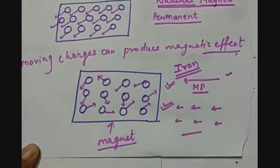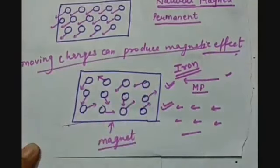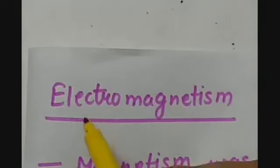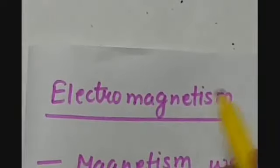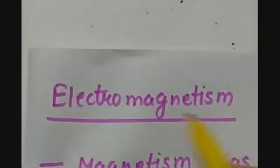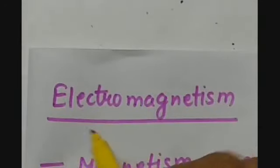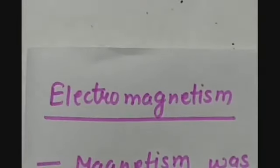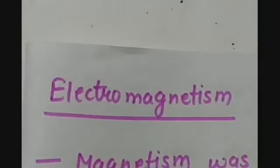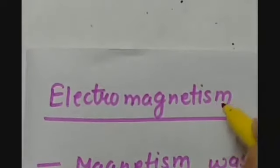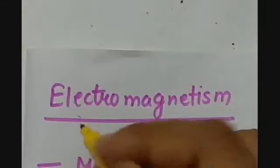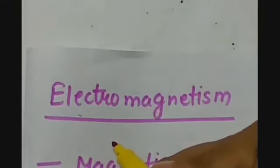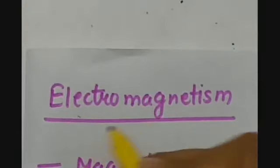Now we can understand the meaning of electromagnetism. When magnetism or magnetic effect is produced because of electric current, it is called electromagnetism. This process can also be reversed — Faraday concluded that when current can produce magnetic effect, the vice versa can also be true: with the help of magnetic effect we can also generate electricity. So this relation between current and magnetism is called electromagnetism.